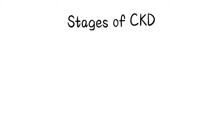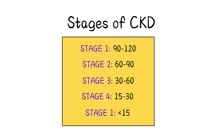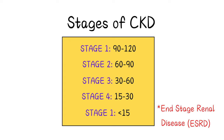Now let's move on to the stages of CKD. Stage 1 refers to an estimated glomerular filtration rate of 90–120. Stage 2 is 60–90. Stage 3 is 30–60. Stage 4 is 15–30. And Stage 5 refers to an eGFR of less than 15, which is indicative of end-stage renal disease.